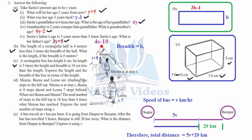Part d: Meena, Bina, and Lina are climbing steps to the hilltop. Meena is at step s, Lina is 8 steps ahead, and Bina is 7 steps behind. Meena is at step s. Since Lina is 8 steps ahead of Meena, Lina is at s plus 8. Since Bina is 7 steps behind Meena, Bina is at s minus 7.